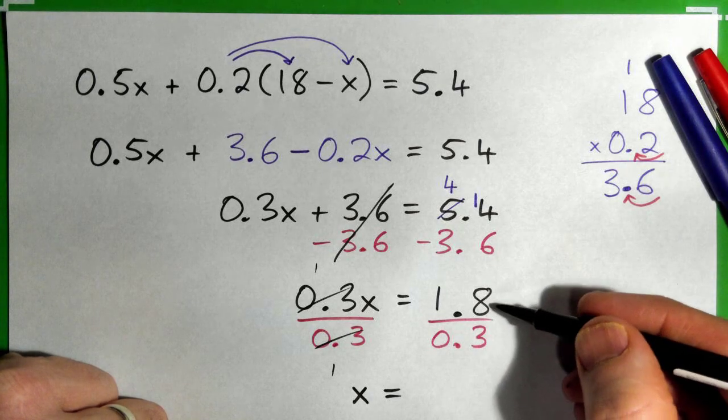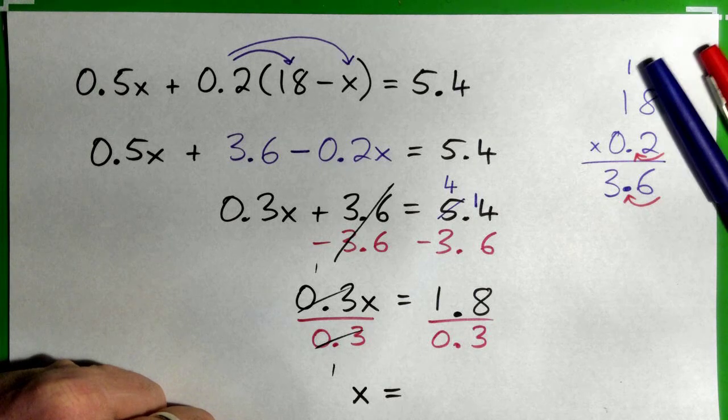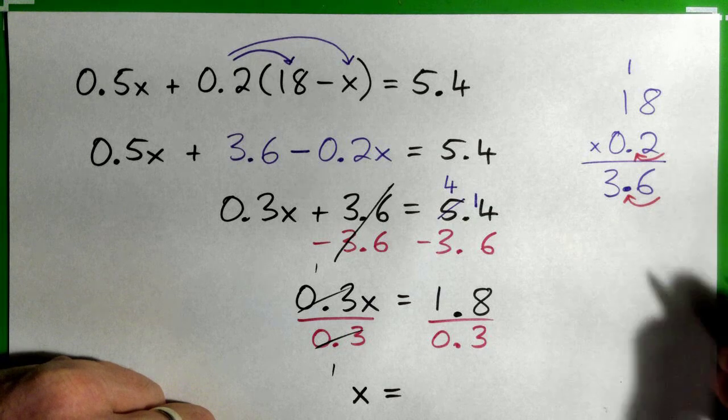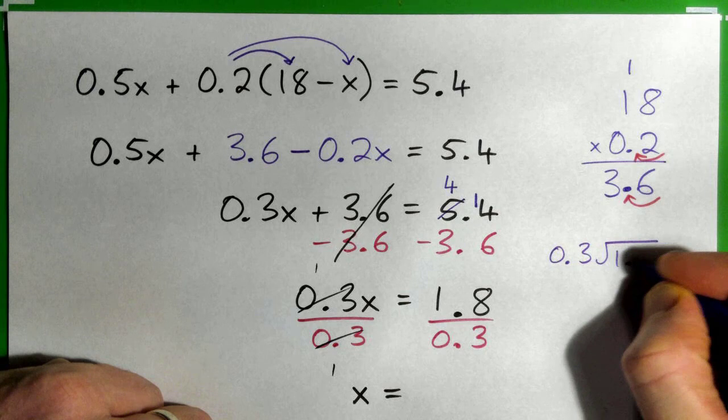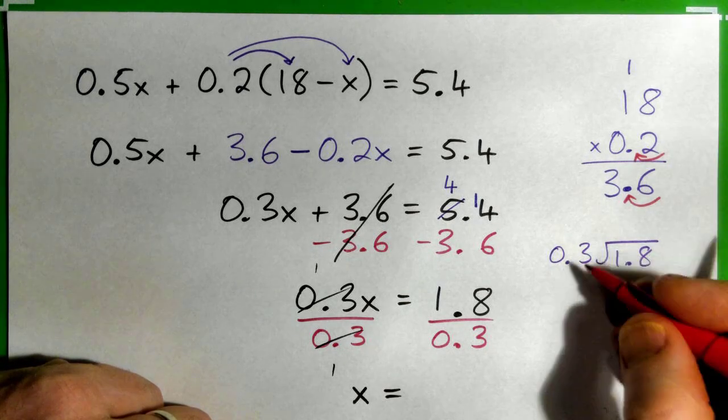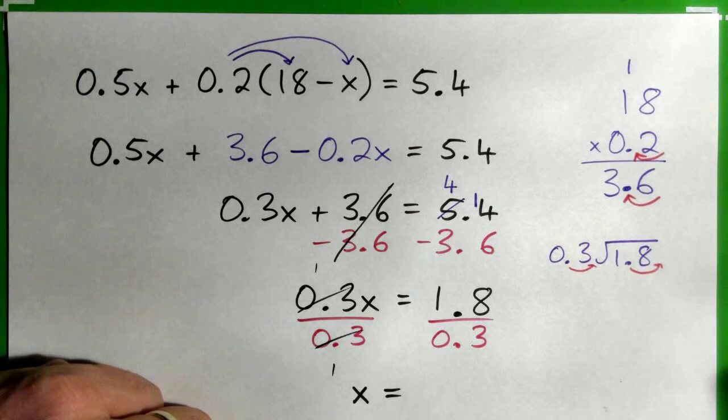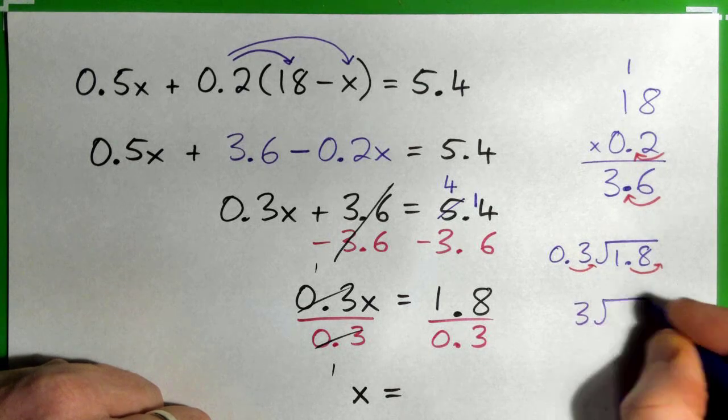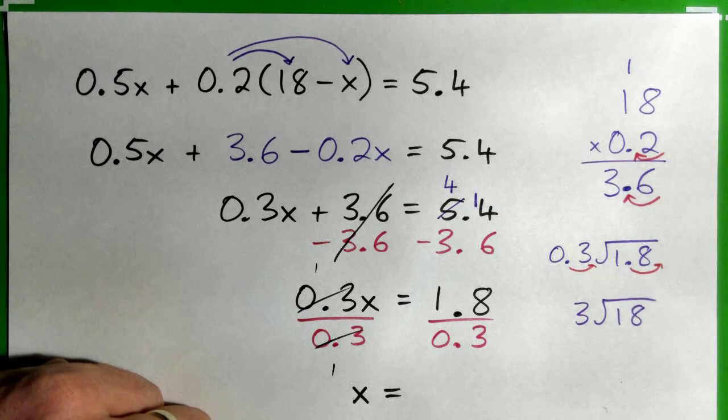Over here we have 1.8 divided by 0.3. There's a couple of ways of working that out. I'll do two different ways. So I think a lot of students would probably prefer to do the 0.3 into 1.8 long division. And they remember, oh, I've got to move this decimal point to the right and also move this to the right because this needs to be a whole number, right? So now I have 3 into 18, which is 6. 3 into 18 is just 6, right? So that becomes 6.